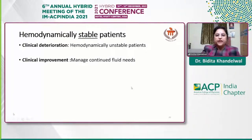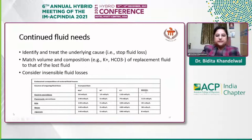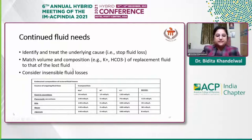In continued fluid needs, only replace ongoing fluid loss that cannot be compensated by oral or enteral routes. Importantly, identify and treat the underlying cause — you cannot keep giving fluid without addressing the GI or urinary loss. Match the volume and composition of fluid given to what is lost. Tables of various losses and secretions can be found in any textbook. Also consider insensible fluid loss.